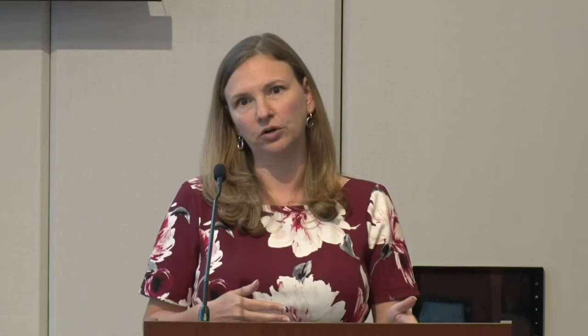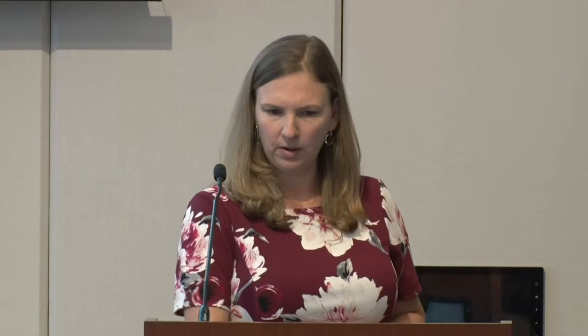Regarding cognition, we may do simple screening tests like the Montreal Cognitive Assessment. There is also an ALS-specific longer evaluation: the Edinburgh Cognitive and Behavioral ALS Screen, which looks for ALS-specific parameters. There is also the ALS Cognitive Behavioral Screen, both of which have caregiver portions. I'll now hand off to Sharon to talk about swallowing.